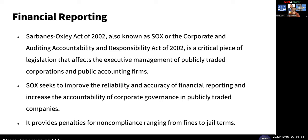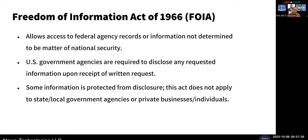Sarbanes-Oxley — called SOX — came out of concerns about what public accounting firms were doing. The idea is to ensure that accounting information provided by publicly traded companies is accurate. There are penalties for noncompliance: you can pay money or go to jail. Previously, CEOs could sign public disclosures with no personal liability, but now you can be personally liable for signing those documents. The Freedom of Information Act — FOIA — allows access to agency records.